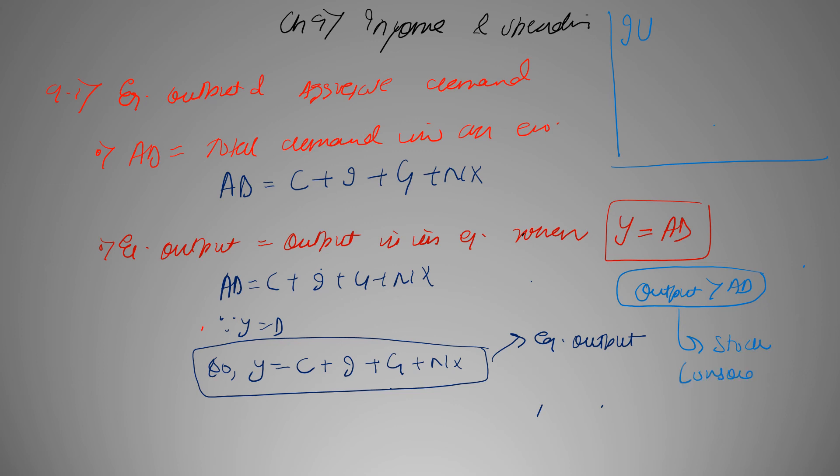So IU can simply be represented as Y minus AD which is output minus demand.